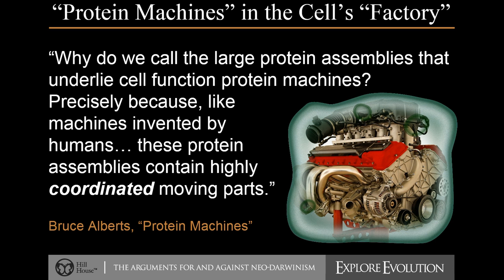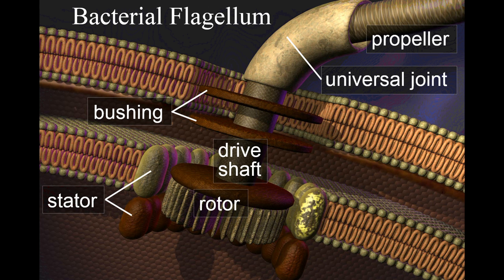Specifically, through protein machines or molecular machines. One of those machines that has been well studied is the machine that allows the flagella on a bacterium to move. The flagella, as you remember from our study of cells, has a long tail structure that a cell uses to swim. This motor spins the flagella at very high speeds to allow it to move.